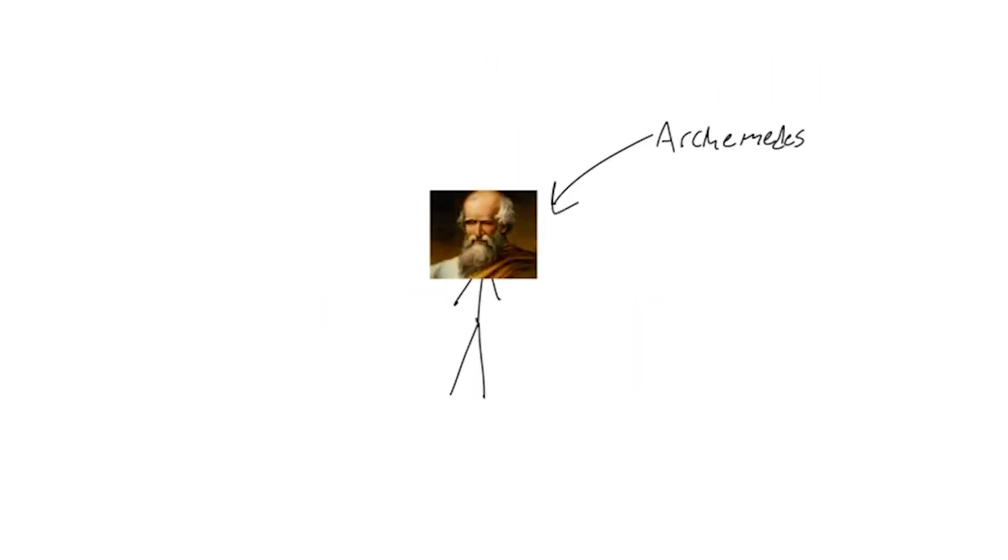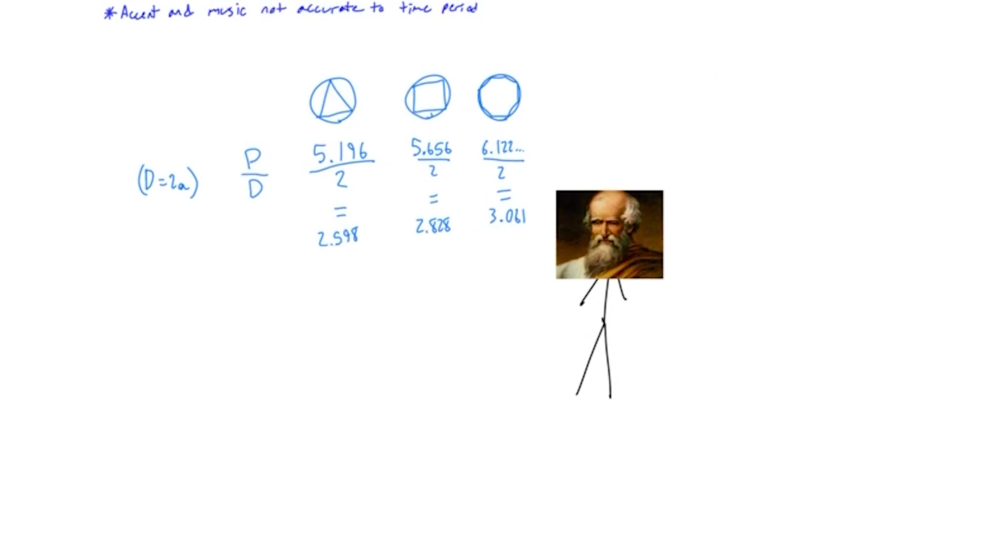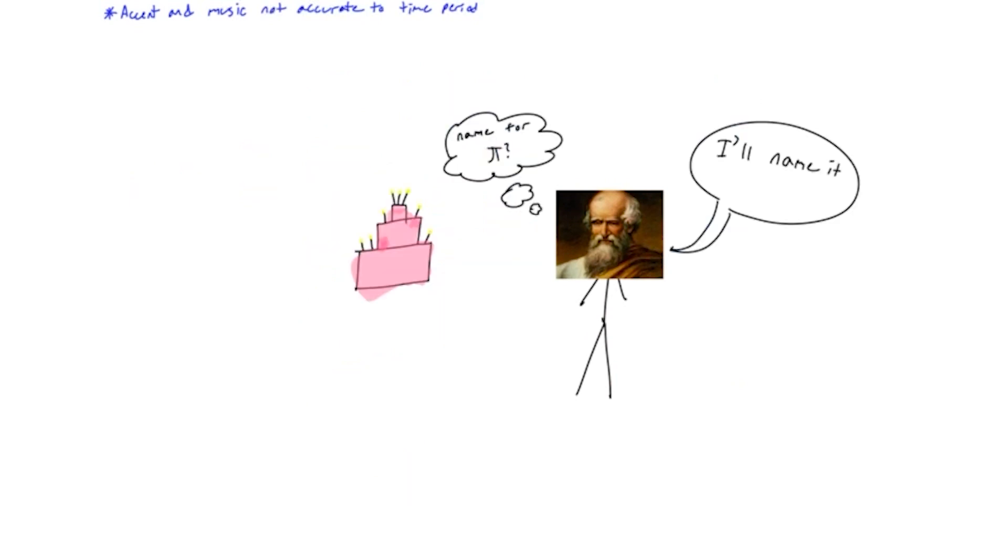Imagine this guy, Archimedes, and it's around 250 BC. One day, he's like, wait a dang minute, if I put a triangle in the circle and measure the sides. Wait, but if I put this square in? Oh, and this octagon? Oh my Zeus, it's more precise number every time! This value here is a constant no matter what the circle radius is, I'll name it Pi!